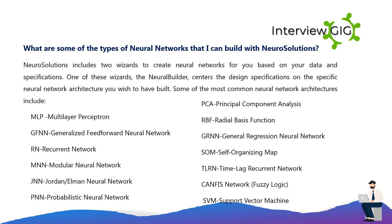What types of neural networks can be built with NeuroSolutions? NeuroSolutions includes two wizards to create neural networks based on your data and specifications. The Neural Builder centers design on the specific architecture you wish to build. Common architectures include: MLP Multilayer Perceptron, GFNN Generalized Feed Forward Neural Network, RN Recurrent Network, MNN Modular Neural Network, JNN Jordan/Elman Neural Network, PNN Probabilistic Neural Network, PCA Principal Component Analysis, RBF Radial Basis Function, GRNN General Regression Neural Network, SOM Self-Organizing Map, Time Lag Recurrent Network, CANFIS Network, Fuzzy Logic, and SVM Support Vector Machine.